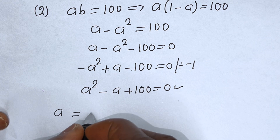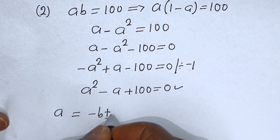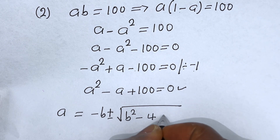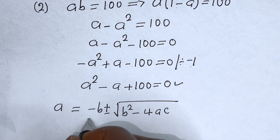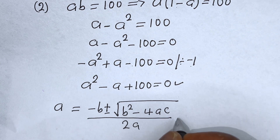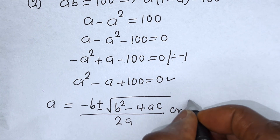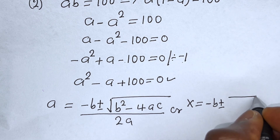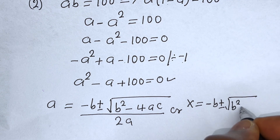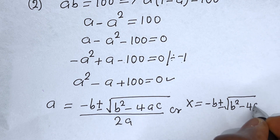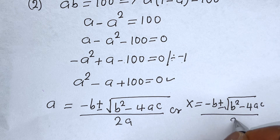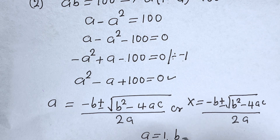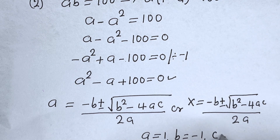The quadratic formula is: a equals minus B plus or minus square root of B squared minus 4AC, over 2A. From the equation a squared minus a plus 100 equals zero, we identify: A is equal to 1, B is equal to minus 1, and C is equal to 100.